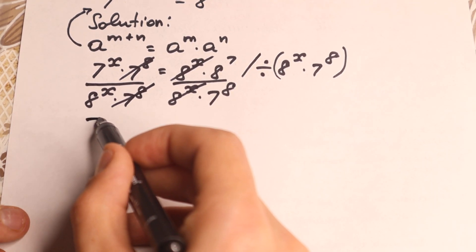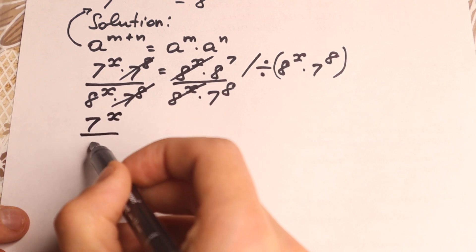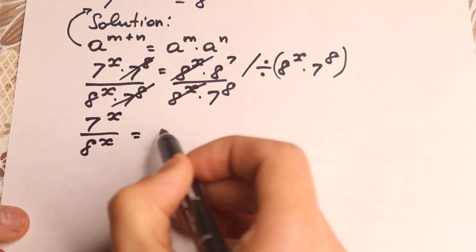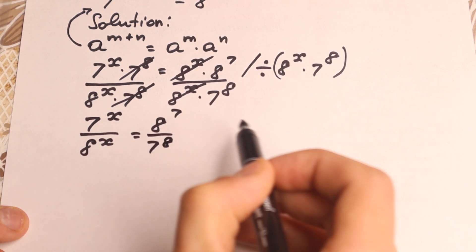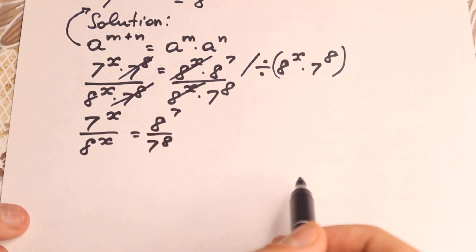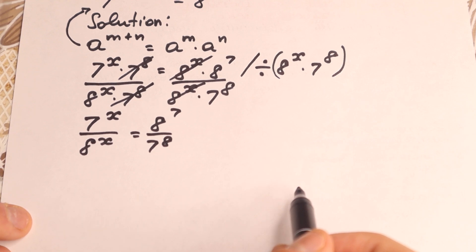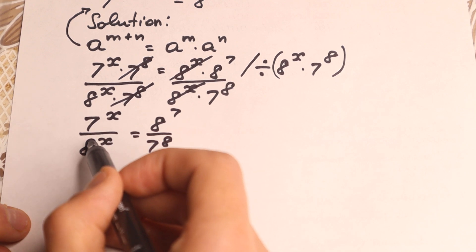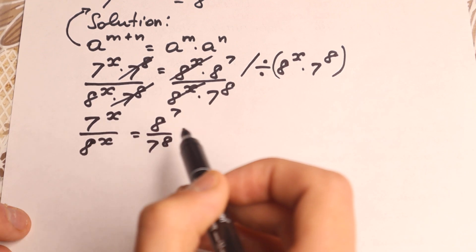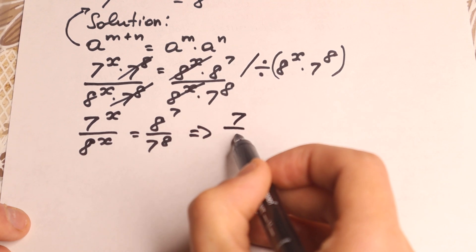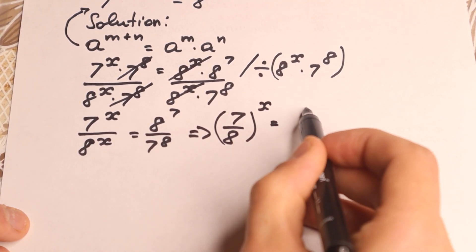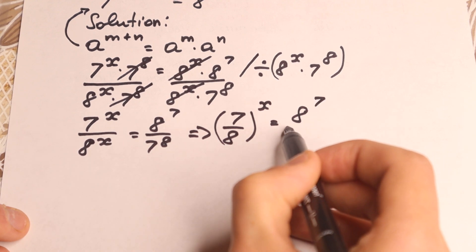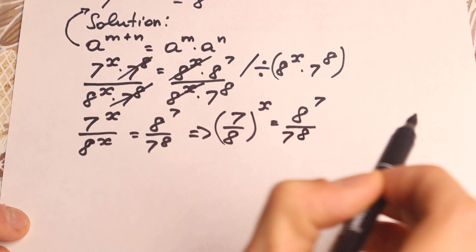As a result, on the left hand side we have 7 to the x over 8 to the x, equal to 8 to the 7 over 7 to the 8th power. We can group this in parentheses because we have the same power, writing it as 7 over 8 to the power x equal to 8 to the 7 over 7 to the 8th.